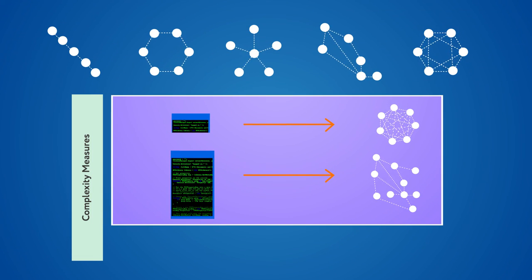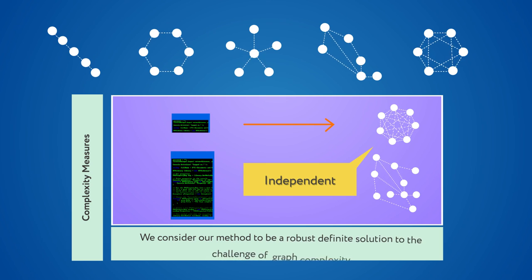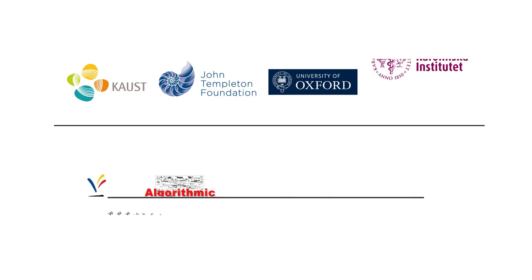We have proven, both theoretically and numerically, that the graph complexity as measured by this approach is independent of the different representations in which a graph can be described, and thus, we consider our method to be a robust solution to the challenge of graph complexity.